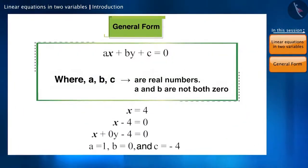So we can say that even if either a or b is zero, the equation can be represented in the form of a linear equation in two variables.